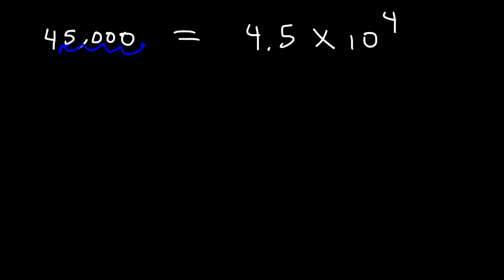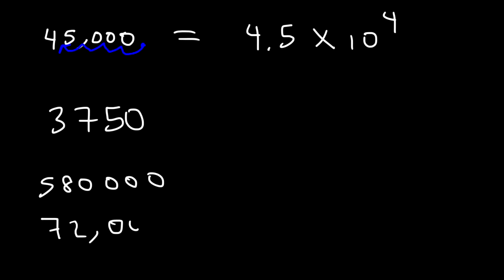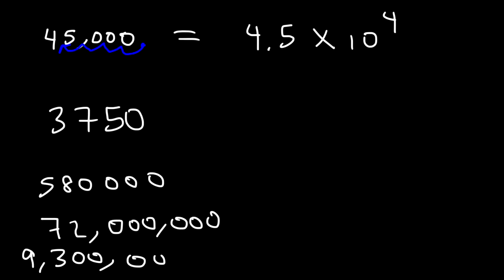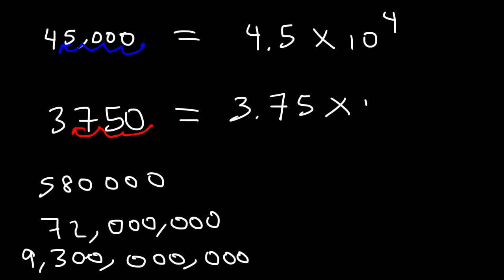Let's work on some more examples: 3,750; 580,000; 72 million; and 9.3 billion. Go ahead and convert these numbers into scientific notation. Starting with 3,750 — I'm going to put the decimal between the 3 and the 7. Since I moved it three spaces to the left, this is going to be 3.75 times 10 to the 3rd power.